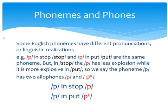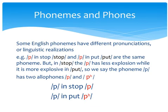Some English phonemes have different pronunciations, or linguistic realizations. For example, the phoneme /p/ in 'stop' is pronounced with less aspiration — we say 'stop', not an aspirated 'stop'. While the phoneme /p/ in 'put' is pronounced with high aspiration — we say 'put'. So /p/ in 'stop' has less aspiration while it is more aspirated in 'put'. In this way, we say the phoneme /p/ has two allophones, or two phonetic realizations.